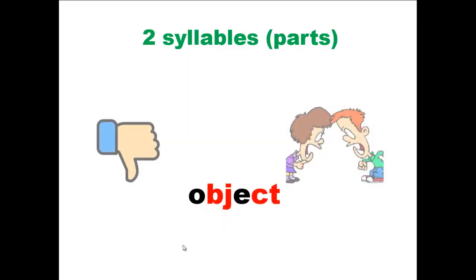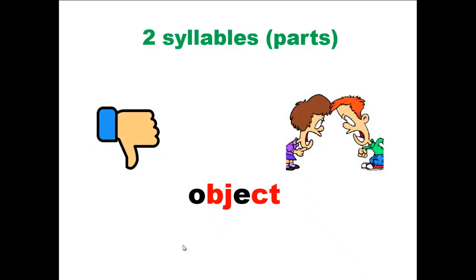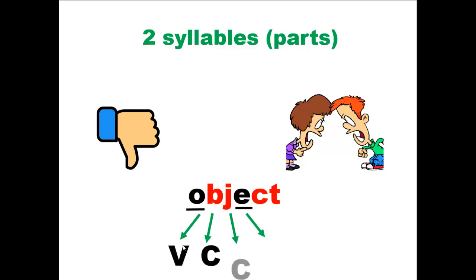Another example: object, which means to show your disagreement with something, to show an opposite opinion. Here are the two vowel sounds. The pattern: vowel sound, another consonant, another consonant, then a vowel sound. The word should be divided between the consonants, which are different consonants.